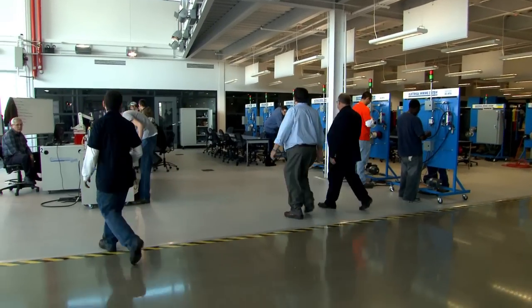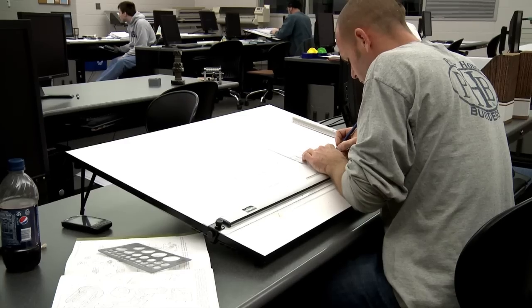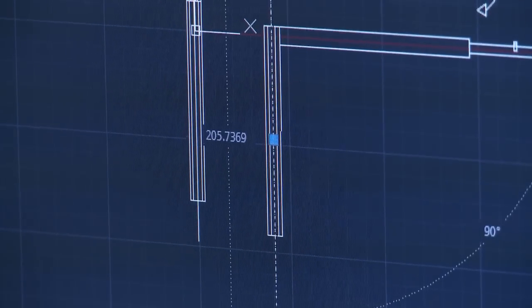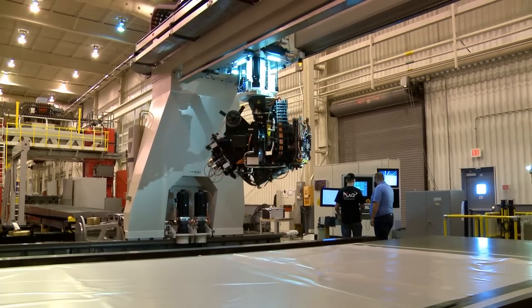Some students coming out of high school realize that four-year colleges aren't for them. They want something—they like to work with their hands, they like to design things—and a community and technical college is the perfect place for them to get the skills that they need to satisfy what they need for their life.